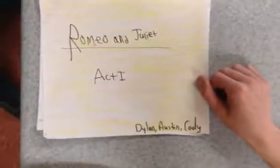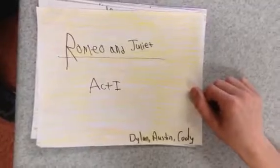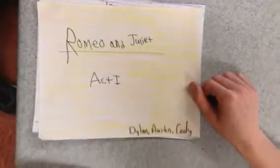Romeo and Juliet, Act 1, by Dylan, Austin, and Cody.